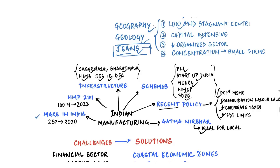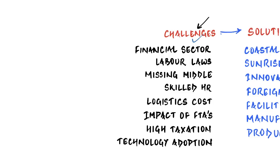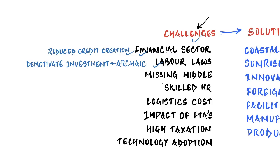Despite these efforts, manufacturing is still not performing well. Beyond COVID-19, other challenges persist. Starting with the financial sector: NPAs have been at very high levels consistently over the past decade. The NPA problem in Indian banks and the liquidity crunch faced by NBFCs has led to reduced credit creation. Then, archaic and antiquated labour laws have led to higher compliance burdens on firms and disincentivized private sector investment. Additionally, Indian manufacturing faces the problem of the 'missing middle' — dominated by very large numbers of small enterprises and relatively few large-scale firms, with almost no mid-sized firms.